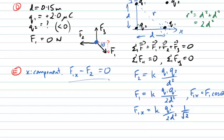So now we can do our force equation here. We can write F1x is k q1 squared over 2 d squared times one over root two, minus F2, which is k q1 q2 over d squared. And that must equal zero. That's what the question is asking us to determine.